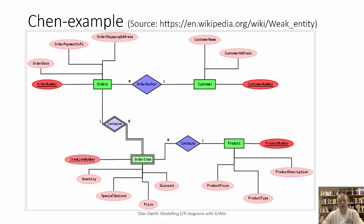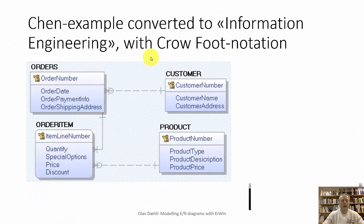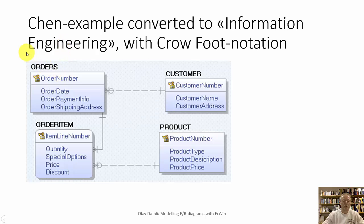Here we have an example with the Chen model. The Chen model is widely used and it's a good model, but one of its problems is that it very fast grew very large. Because all the attributes connected to these entities are drawn in circles outside the entity, so the model becomes very space consuming. Here I have drawn exactly the same model with the information engineering method using the crowdfoot notation. We see that this is a much more compressed model, because instead of having all these attributes in circles around the entities, we have them inside the entities.